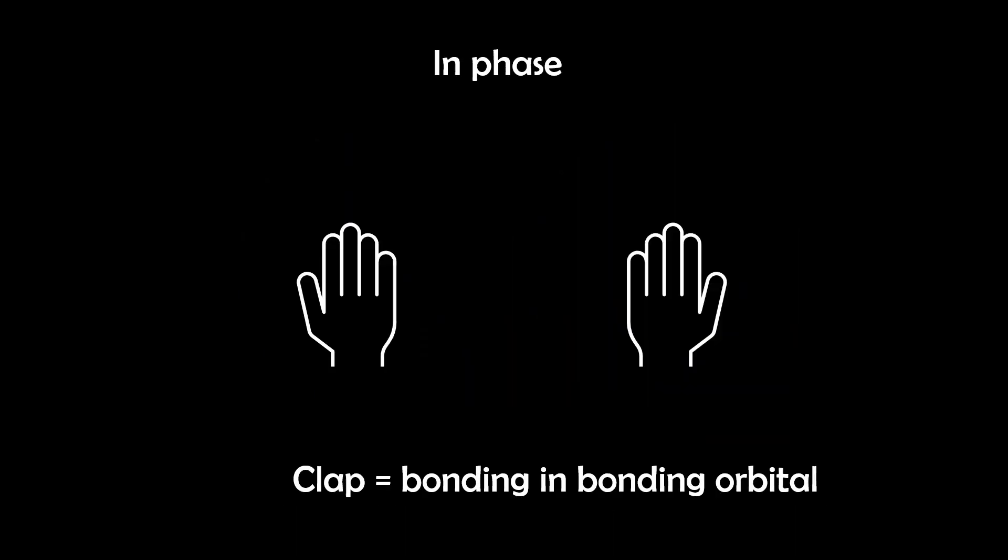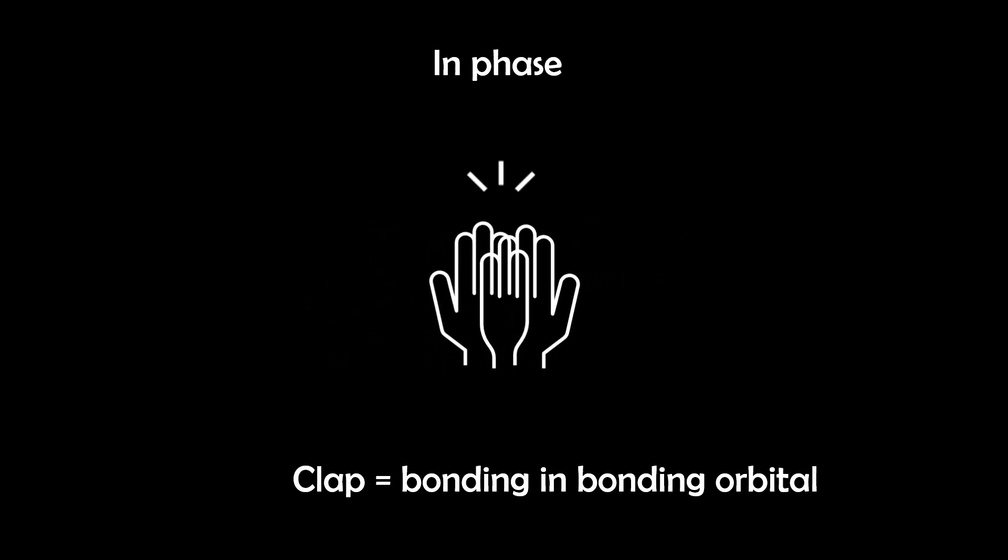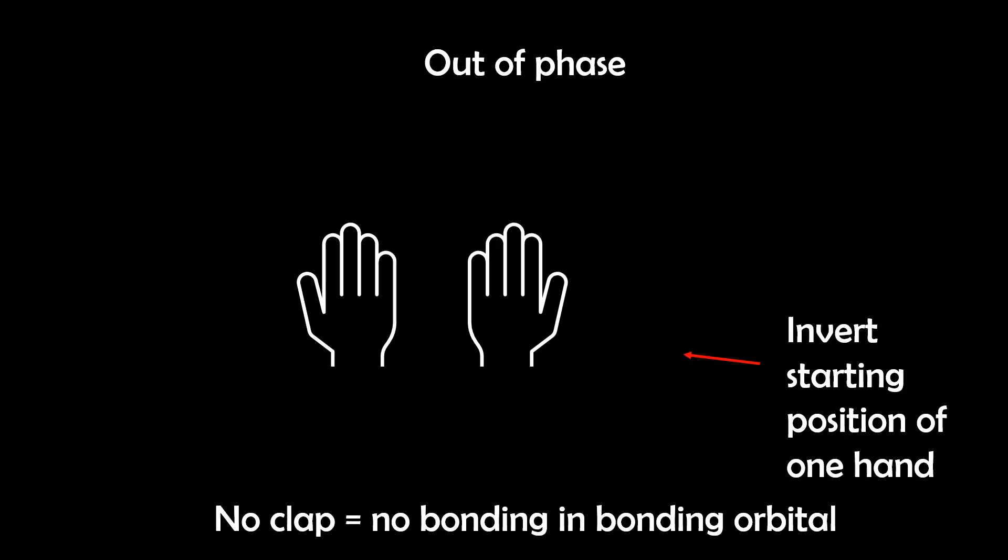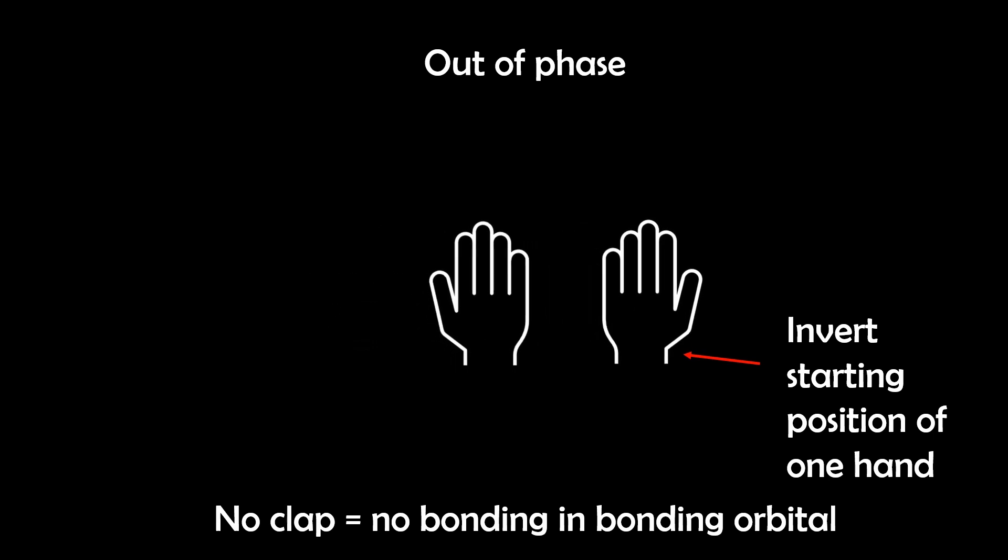Another analogy I like to imagine is clapping your hands. If both hands move towards each other at the same time, which is in phase, you get a clear clap. That's bonding. But if one hand pulls away while the other hand comes forward, which is out of phase, they miss. No sound, no bond.